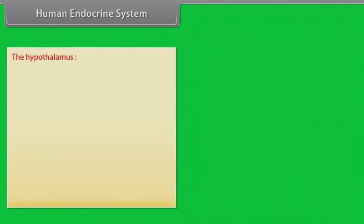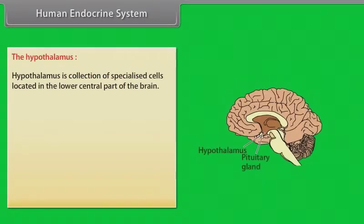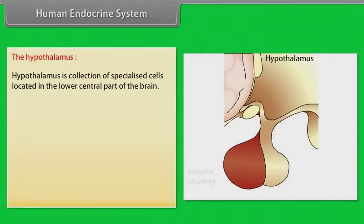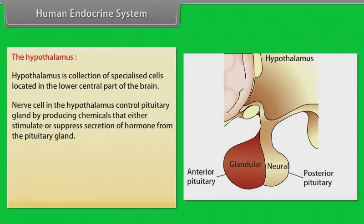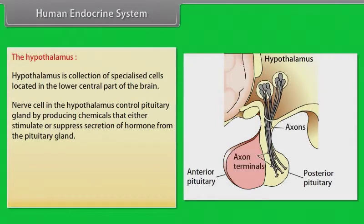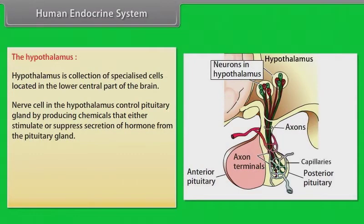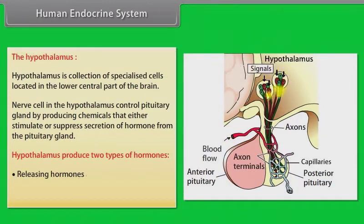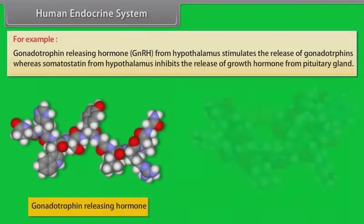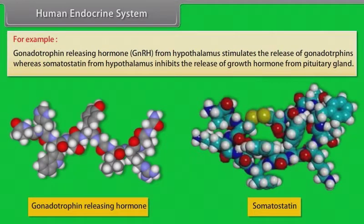The hypothalamus is a collection of specialized cells located in the lower central part of the brain. Nerve cells in the hypothalamus control the pituitary gland by producing chemicals that either stimulate or suppress secretion of hormones from the pituitary gland. Hypothalamus produces two types of hormones: releasing hormones and inhibiting hormones. For example, gonadotrophin releasing hormone from the hypothalamus stimulates the release of gonadotrophins, whereas somatostatin from the hypothalamus inhibits the release of growth hormones from the pituitary gland.